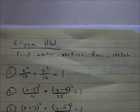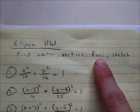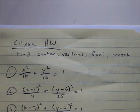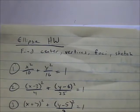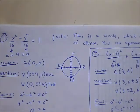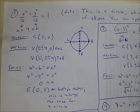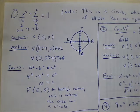This is the ellipse homework. We're going to find the center, the vertices, the foci, and for each of these we're going to sketch as we go. I happen to already have the solutions written out, so I'm going to show you each problem — you can use the pause button if you need a longer look. I'm not going to go step by step through every single thing, but I will show you some important features of each problem.